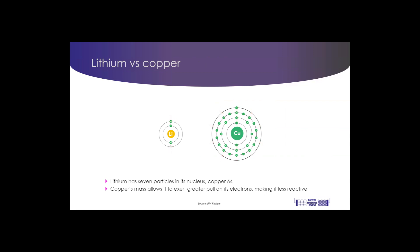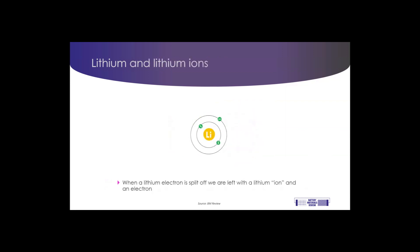The inner ring of electrons in lithium is pretty stable, but the outer one is not, and that's what makes lithium such a reactive metal. It's possible to separate the outer electron from the nucleus of the lithium.